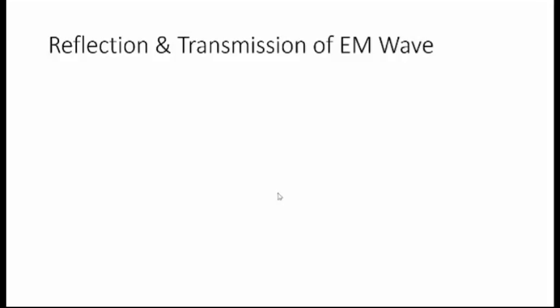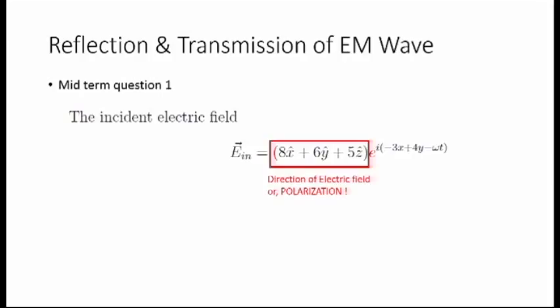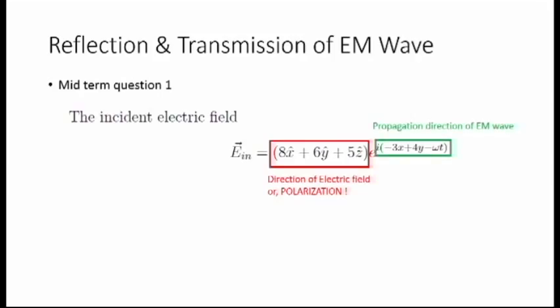Now we will talk on the second part of the topic: reflection and transmission of electromagnetic waves. When an electromagnetic wave travels from one medium to another, this analysis comes in handy. To start the discussion, let me recall the first question of our take-home midterm. It was about an incident electromagnetic wave which had an electric field expressed as a specific equation. I told you before that a traveling electromagnetic wave is expressed in terms of electric field. If we analyze this equation of electric field, we see two parts: one part represents the direction of electric field or polarization of the wave, and this direction of electric field is not the same as the direction of propagation.